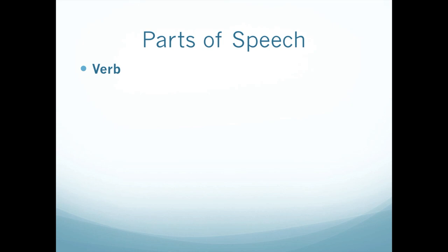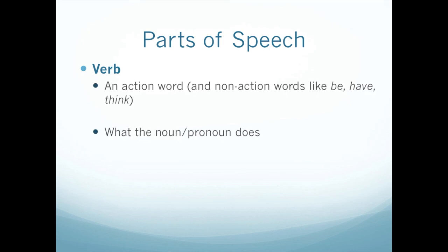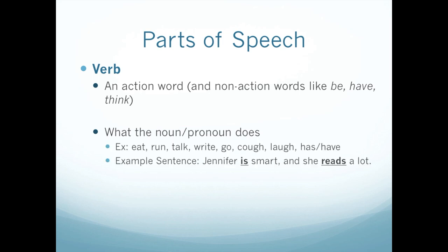Verb is the next part of speech. Verb is an action word, but we do have some non-action verbs like be, have, and think. Our verb shows what the noun or pronoun does. So for example: eat, run, talk, write, go, cough, laugh, has, or have. All of them except has or have are action words. Has or have will be a non-action word. An example sentence would be: Jennifer is smart and she reads a lot. Is is your be verb and reads are both verbs.